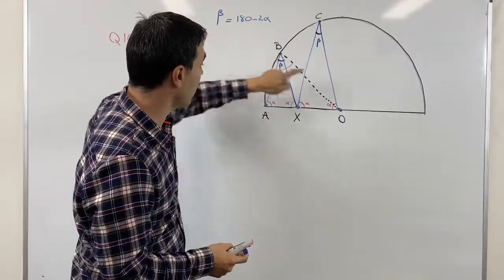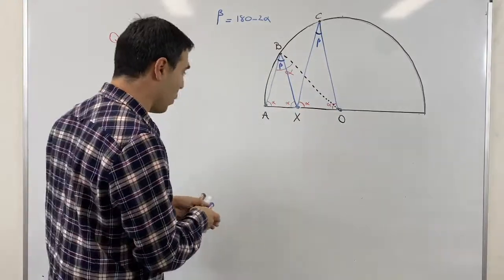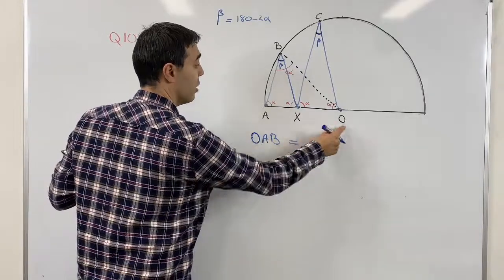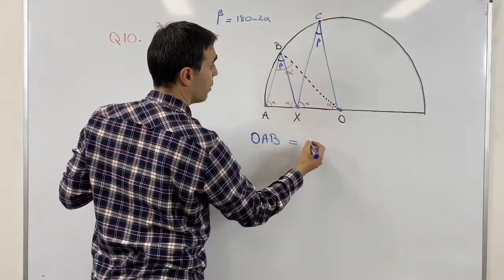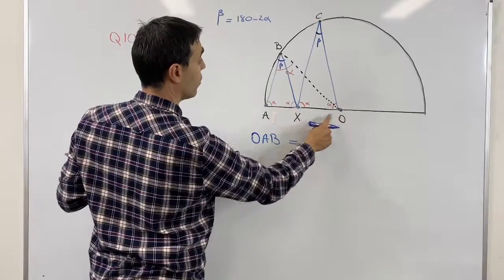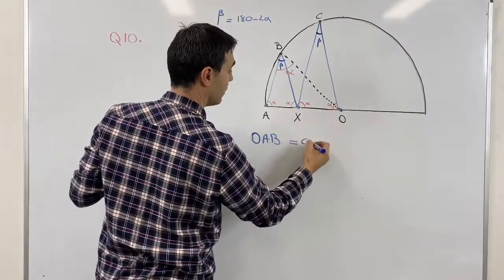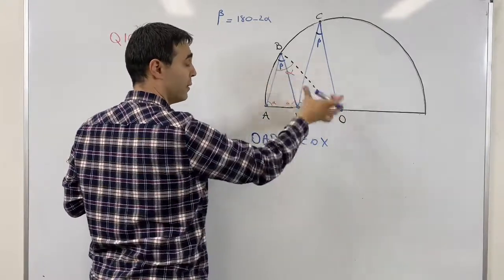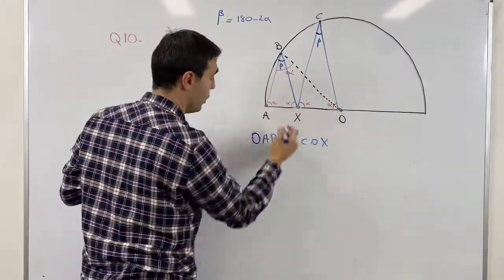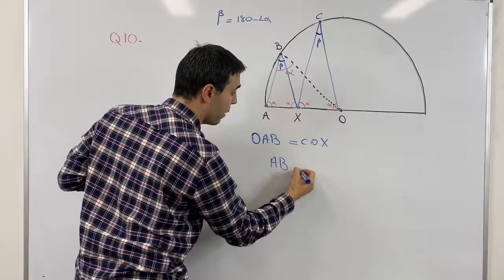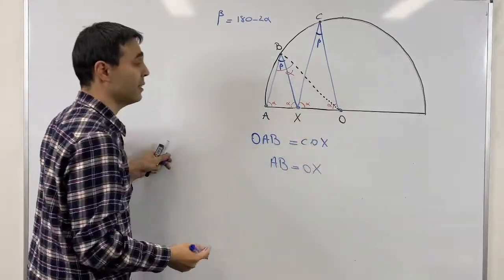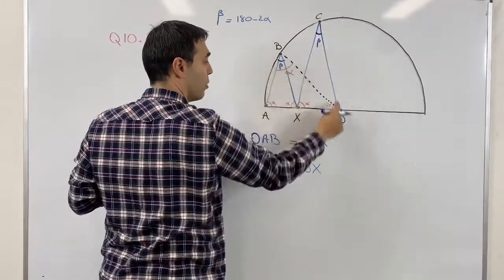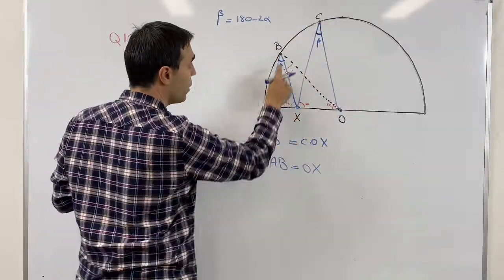Now what we know is triangle OAB is congruent with triangle COX. Therefore those bases should be the same. What we know is AB equals OX, so this is because this triangle and this triangle are congruent.